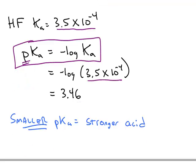And the way that the math works, the smaller the pKa value, the stronger the acid. So larger Ka equals stronger acid. Smaller pKa also stronger acid.